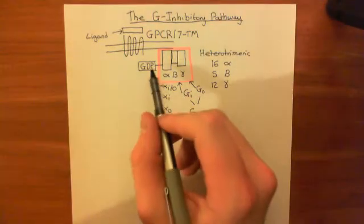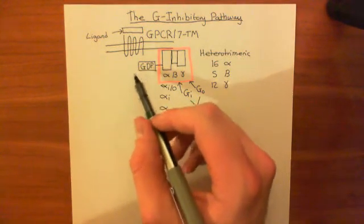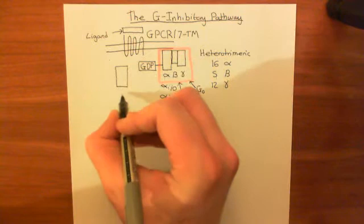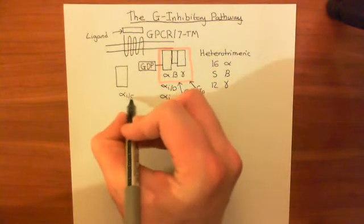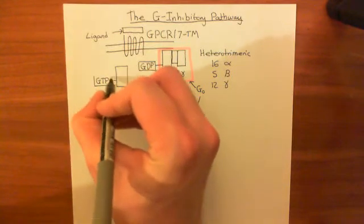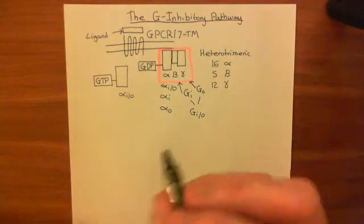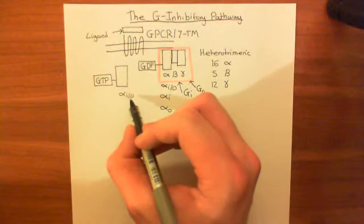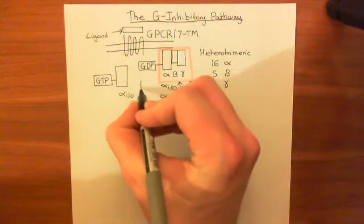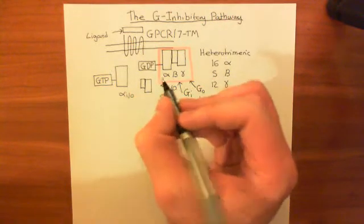The reaction which the GPCR catalyses is basically cutting off the GDP molecule and binding GTP instead. So what you get is the alpha-I/O subunit, now bound to GTP instead of GDP. Once GTP is bound to the alpha-I/O subunit, it no longer wants to associate with the beta and gamma subunits. They go off — they remain bound to each other, but they are no longer bound to the alpha-I/O subunit. This is our beta-gamma subunit.